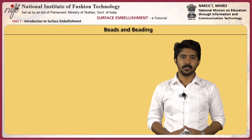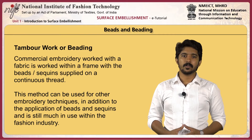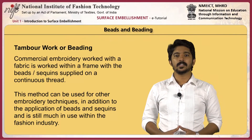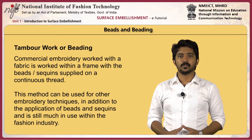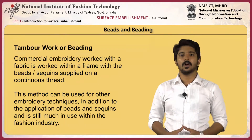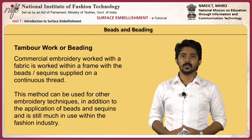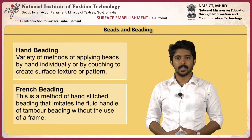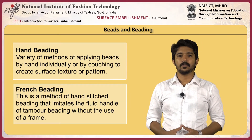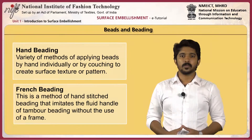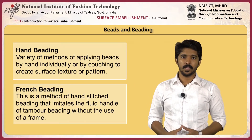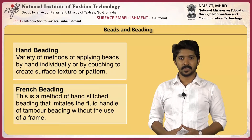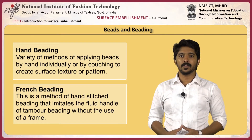There are different types of beading work. Tambour work or beading is a commercially used embroidery technique worked within a frame, with the beads or sequins supplied on a continuous thread. This method can be used for other embroidery techniques in addition to the application of beads and sequins, and is still much in use within the fashion industry. The hand beading technique uses a variety of methods to apply beads by hand individually or in counted patterns to create surface texture or pattern; beads may also be worked over wired or thread constructions. French beading is a method of hand-stitched beading that imitates the fluid handle of tambour beading without the use of a frame.